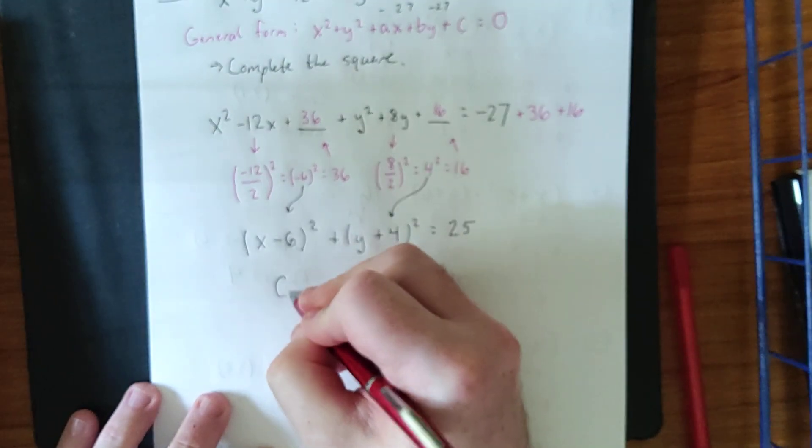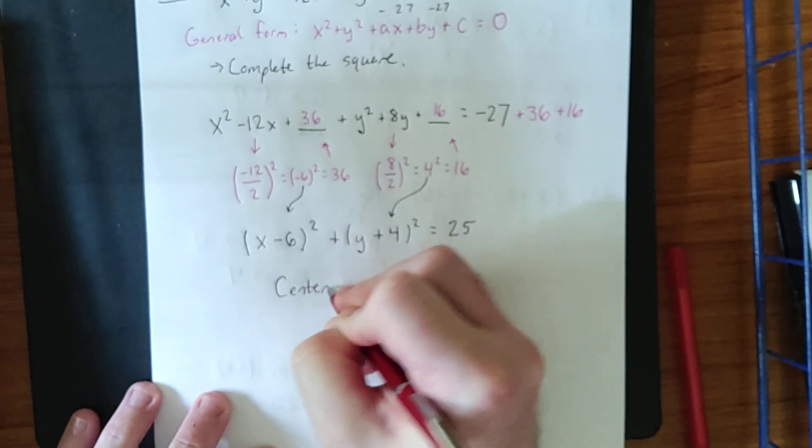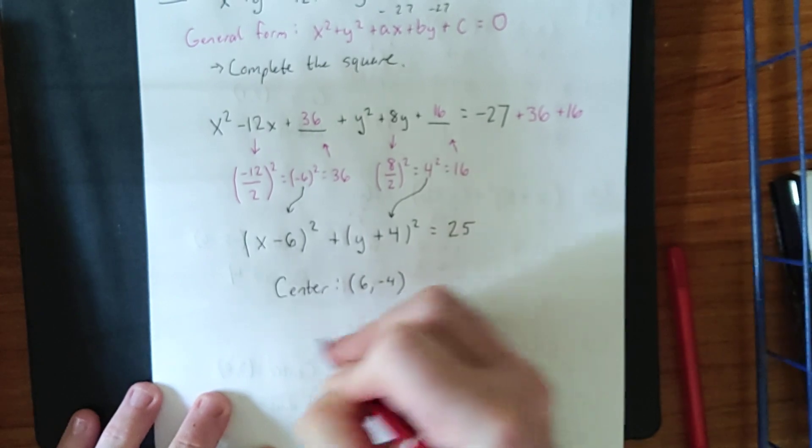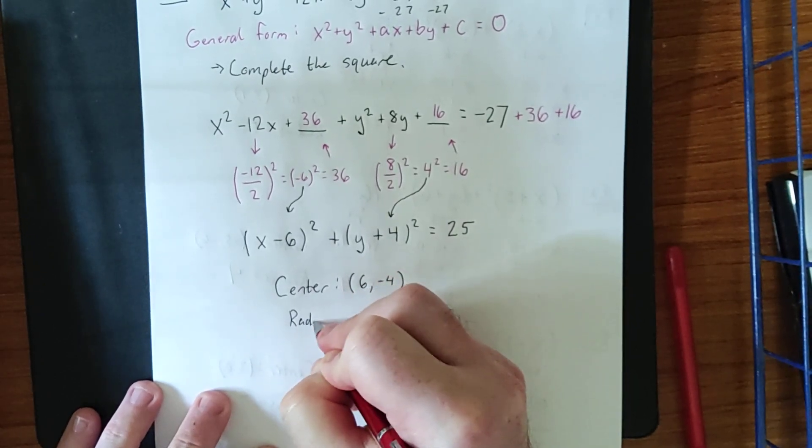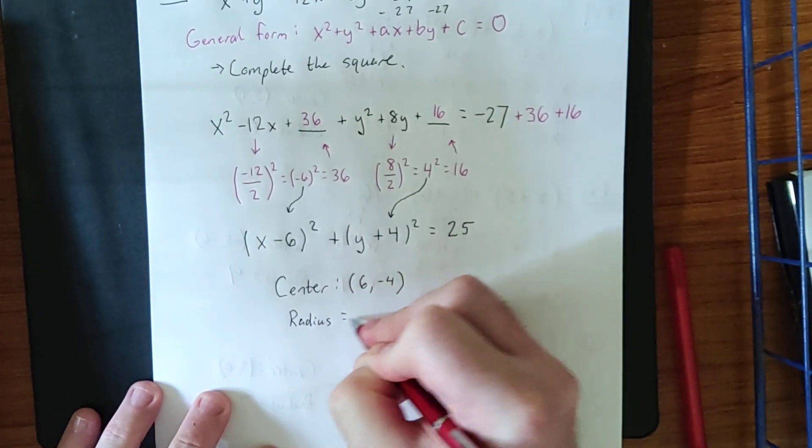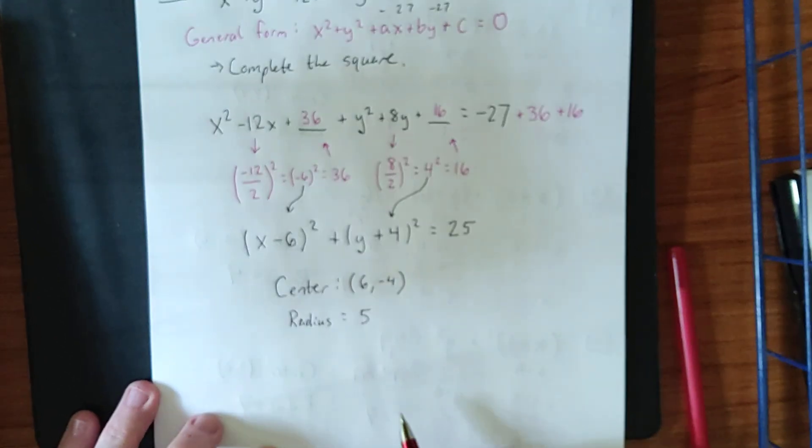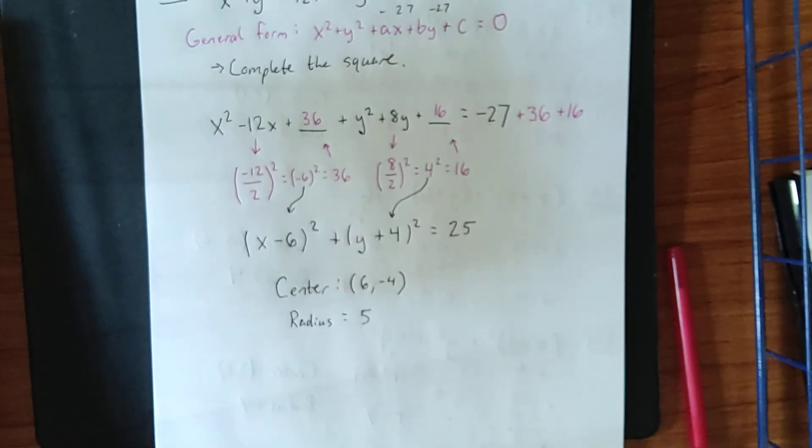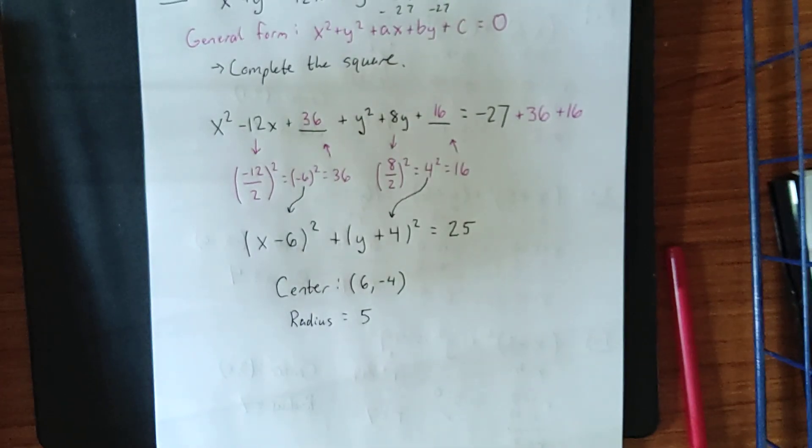I will leave it to you, the viewer, to verify that this means that the center of the circle is going to be positive 6, negative 4, and that the radius of the circle is equal to 5. If you are struggling to make that connection, re-watch the first couple of examples here and see if you can piece it together.